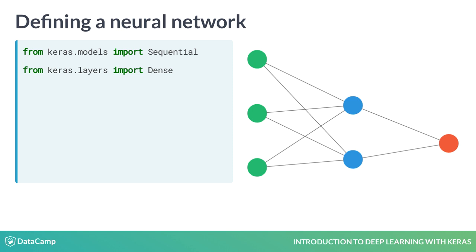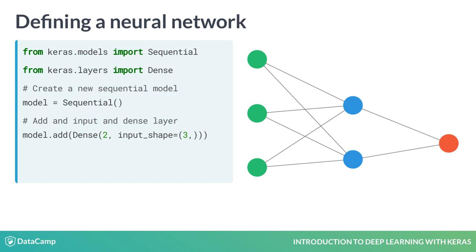We can then create an instance of a Sequential model. In this next line of code, we add two layers: a two-neuron dense fully-connected layer and an input layer consisting of three neurons. The input layer is defined with the input_shape parameter. This first layer matches the dimensions of our input data.